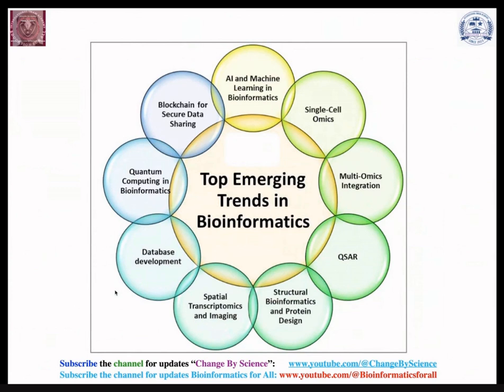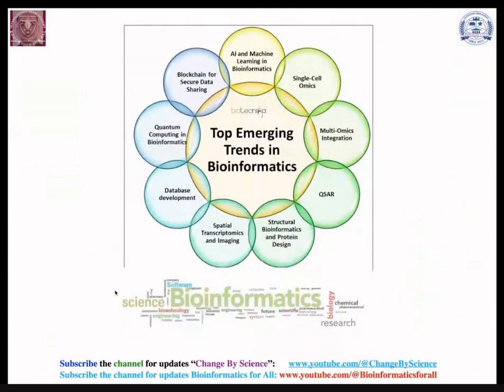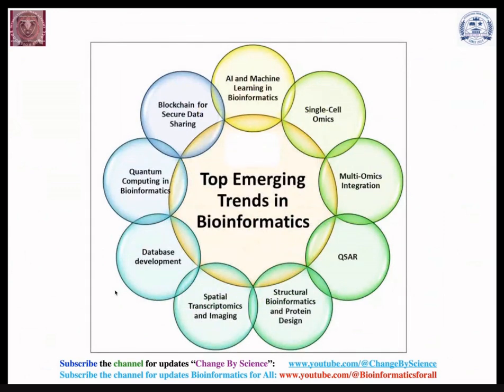The top emerging trends and branches of bioinformatics include single cell omics, multi-omics, spatial transcriptomics and imaging, structural bioinformatics and protein and drug design, database development, quantum computing in bioinformatics, blockchain for securing data sharing, and artificial intelligence and machine learning approaches in bioinformatics. Thank you for your patience in watching these videos — please subscribe to the channels Change by Science and Bioinformatics for All.